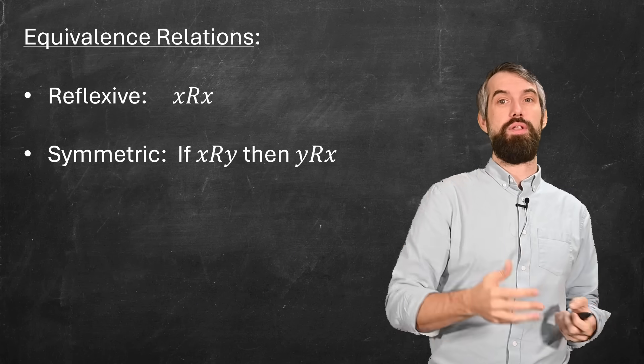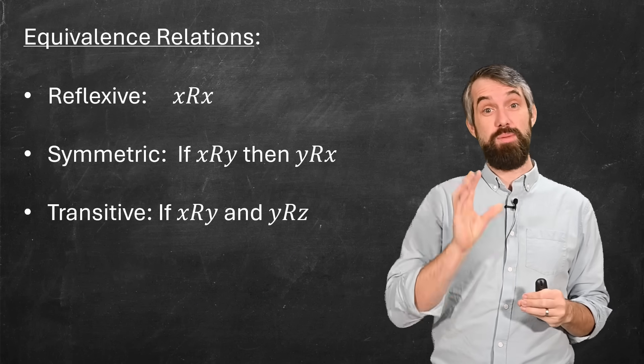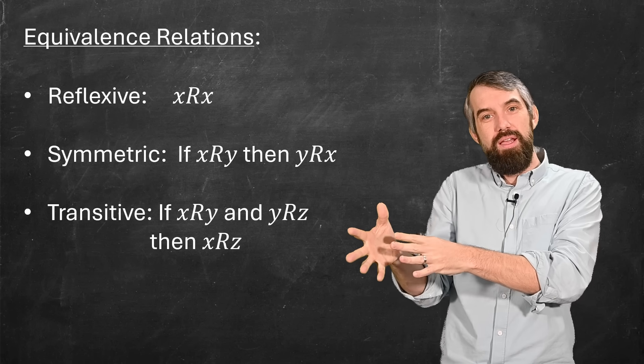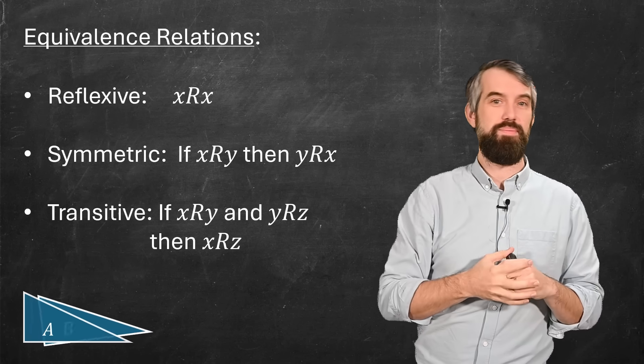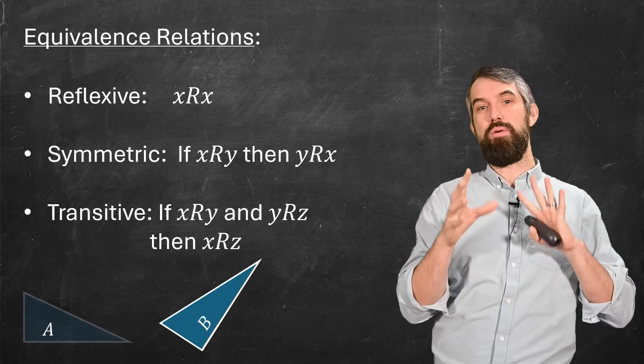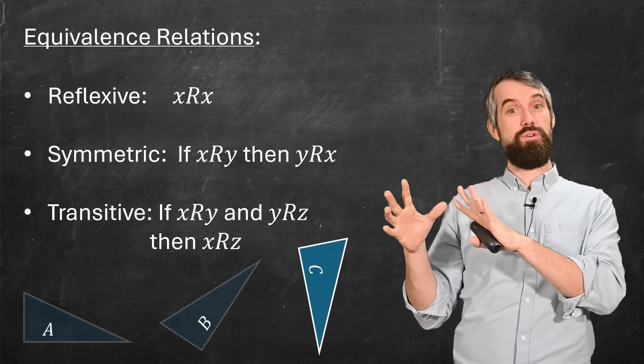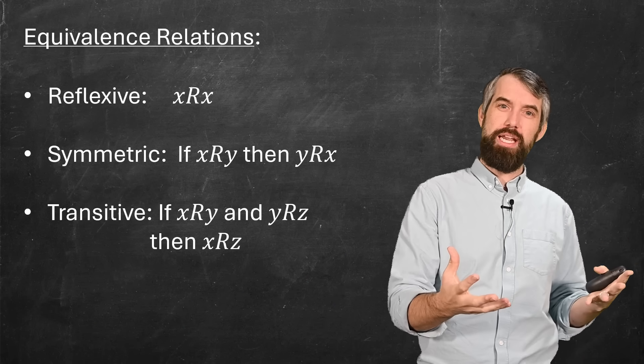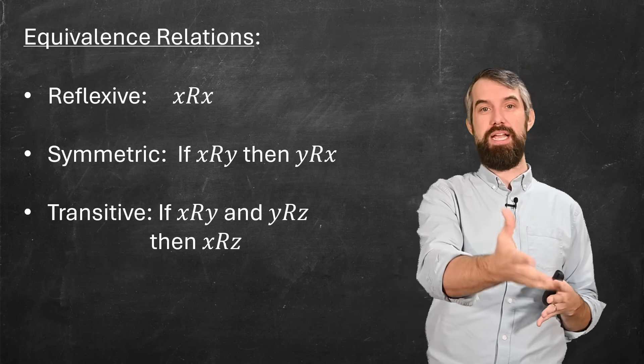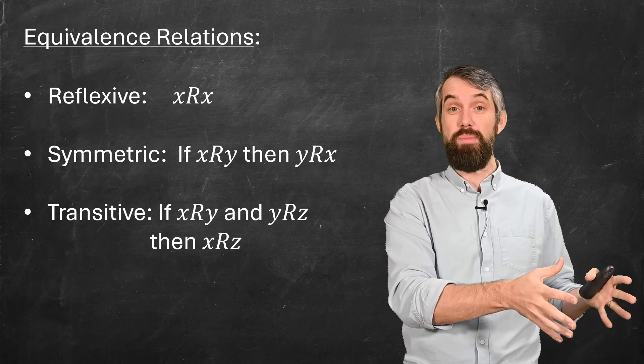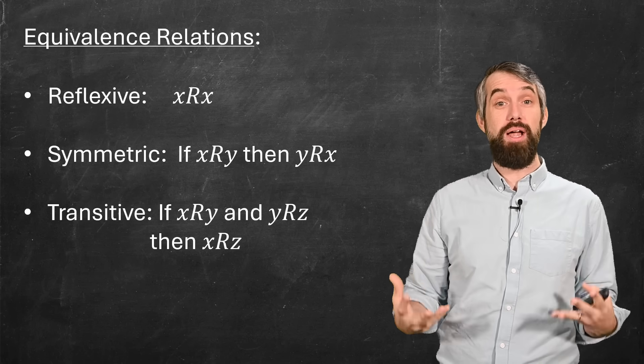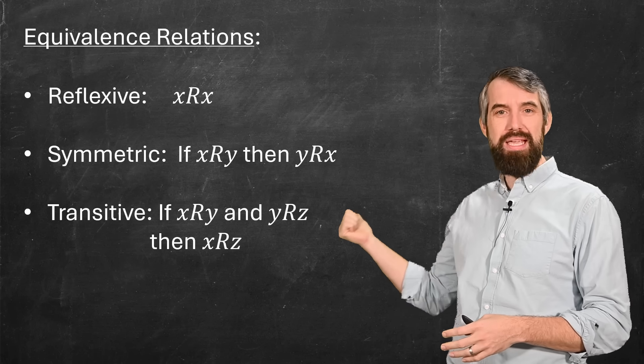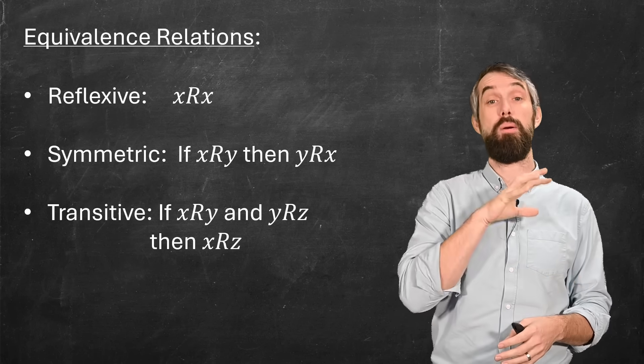And the third property is called transitivity. It's the most interesting one. It says if x is equivalent to y, and y is equivalent to z, then x is equivalent to z. Like if triangle A is congruent to triangle B, and triangle B is congruent to triangle C, then triangle A is congruent to triangle C. So equivalence relations generalize the basic idea of equality of numbers into a bunch of different concepts, and allow us to say two different things are equivalent, meaning they have these three properties.